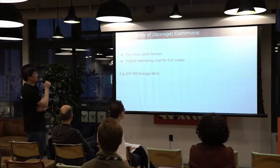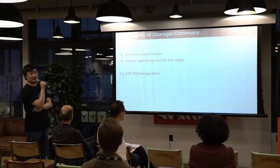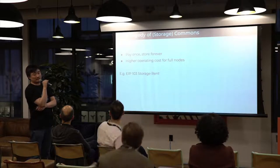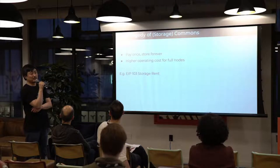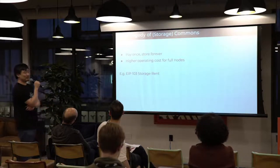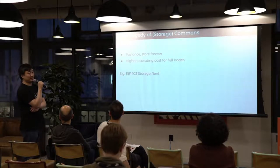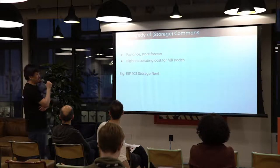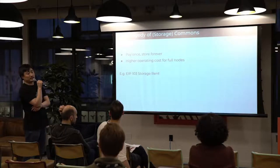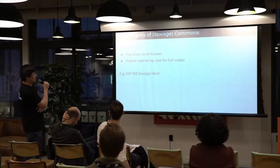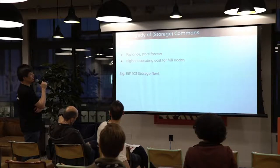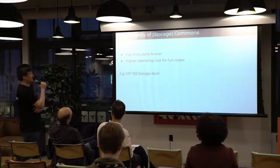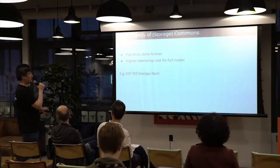The problem with the tragedy of storage commons is: you only pay once and store there forever. For example, EOS did their ICO on Ethereum — those tokens have moved to a different blockchain, but the data is still there. Anyone who wants to run a full node in the future will have to download and store that data forever — a cost for everybody in the Ethereum ecosystem. Ethereum has a storage rent proposal to target exactly this situation.